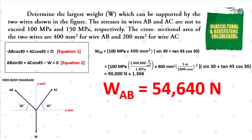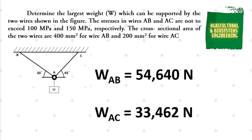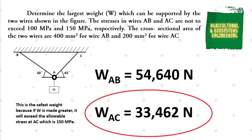The next step is to choose between the weight at AB and the weight at AC. The final answer is 33,462 newtons. It will be the safest weight because if it is made greater, it will exceed the allowable stress at AC which is 150 MPa. That is now the solution for our problem. Please subscribe before you exit.